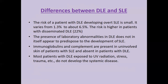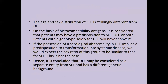The presence of laboratory abnormalities in DLE does not in itself appear to predispose to development of SLE — even if anti-nuclear antibodies are positive in DLE, it does not mean the patient is bound to convert into SLE. Immunoglobulins and complements are present in uninvolved skin in patients of SLE, but not in uninvolved skin in DLE. There is common exacerbation of SLE symptoms with ultraviolet radiation, stress, and trauma, but this is not the case in DLE. The age and sex distribution of SLE and DLE are different; there is very high female-to-male predominance in SLE, but in DLE, the ratio is approximately 1 to 1.